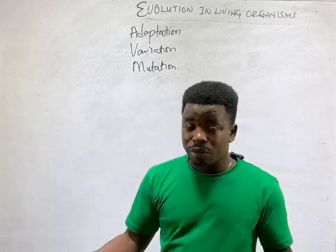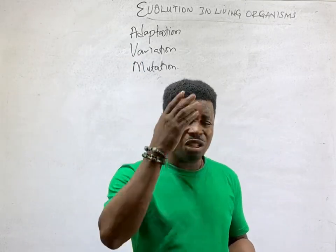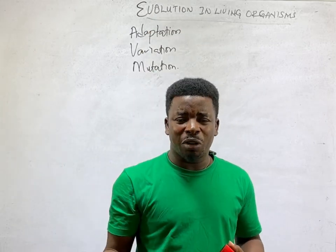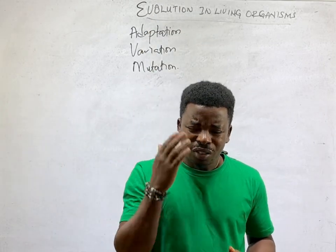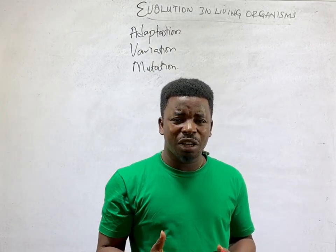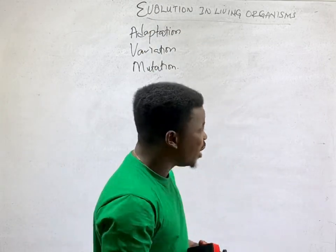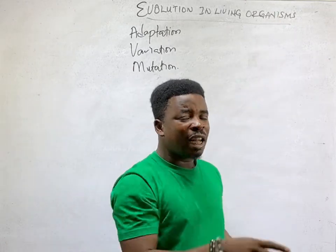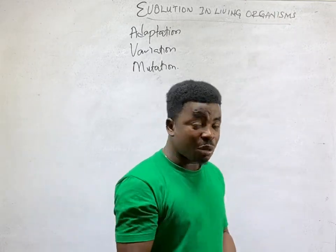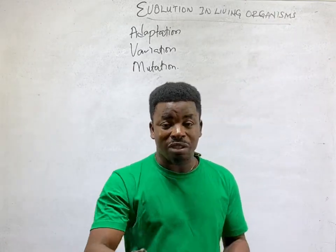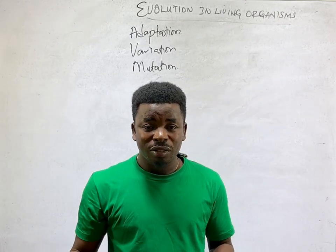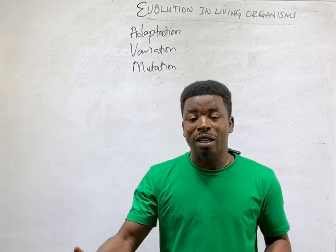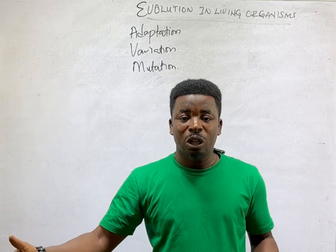Mutation is a sudden break in the genetic makeup of an organism. So if the genetic makeup of an organism is supposed to produce black, and there's a break, it's possible it comes out as red. When that happens and it's passed down, it continues that way.